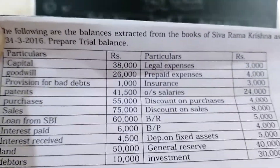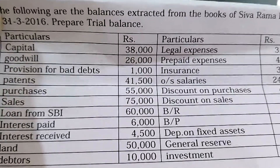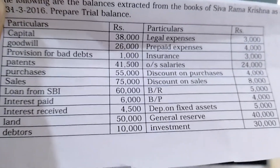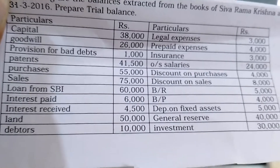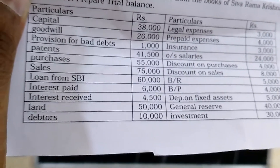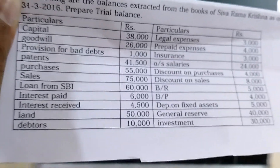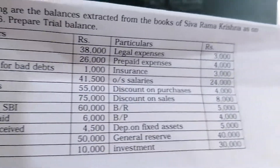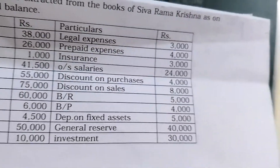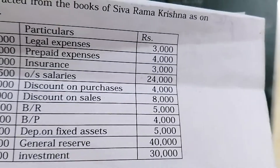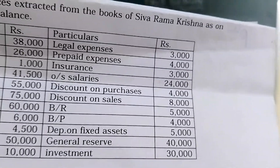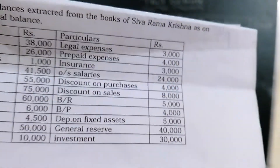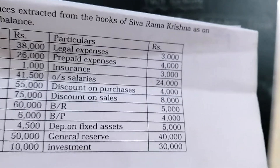Problem three: the following balances are extracted from the books of Sevaram Krishna as on 31st March 2016. Items include: capital 38,000; goodwill 26,000; provision for bad debts 1,000; patents 41,500; purchases 55,000; sales 75,000; loan from SBI 60,000; interest paid 6,000; interest received 4,500; land 50,000; debtors 10,000; legal expenses 3,000; prepaid expenses 4,000; insurance 3,000; outstanding salaries 24,000; discount on purchases 4,000; discount on sales 8,000; bills receivable 5,000; bills payable 4,000; depreciation 5,000; general reserve 40,000; investment 30,000.